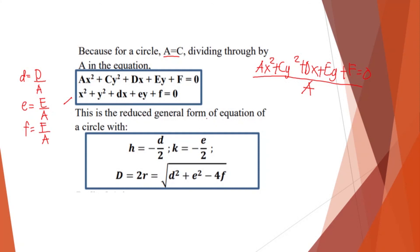And this is the reduced general form of equation of a circle. So meaning if you reduce the general form of equation of the circle, then you can automatically get the center, H and K, and also the diameter or the radius of the circle given by this formula here. So take note of this formula if you wanted to directly get your center and radius.